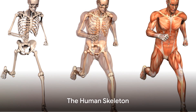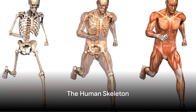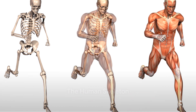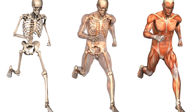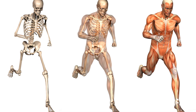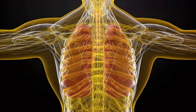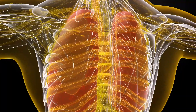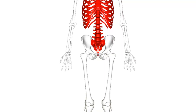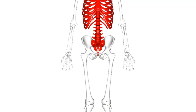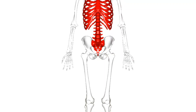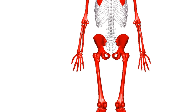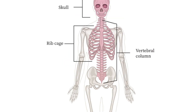First, let's delve into the human skeleton. Acting as the framework of the body, it supports and protects our organs, while also providing the anchor points for our muscles. There are two main parts to the skeleton: the axial skeleton and the appendicular skeleton.